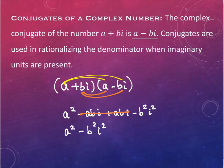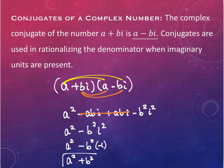But what's i squared? It's negative one. So this is a squared minus b squared times negative one, or a squared plus b squared. And what is conspicuously missing from this term? i's. And that's the point — there are no i's left.